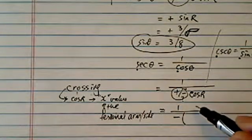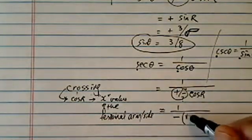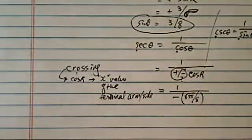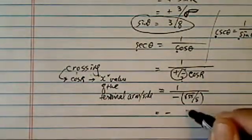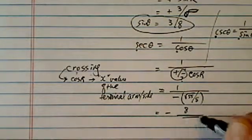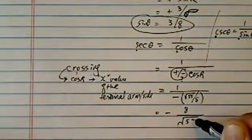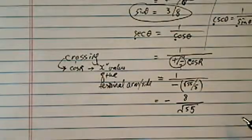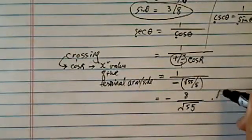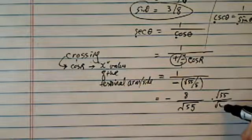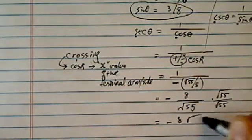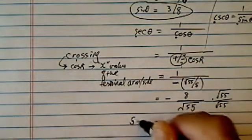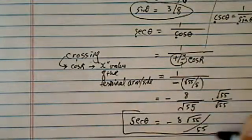Cosine of r, using our reference triangle, is √55 over 8. Okay, since it's 1 over, we're going to take the reciprocal. So, 8 on top, √55 on the bottom. Let's make this one a little prettier by rationalizing the denominator. So we have minus 8√55 over 55. That's the secant theta is equal to this.